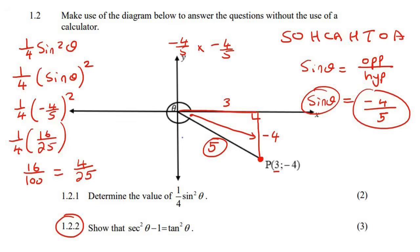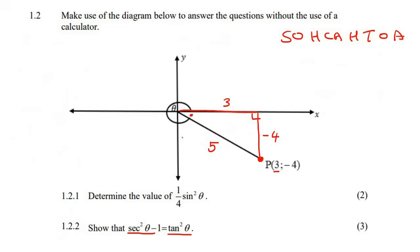This one says, show that this is equal to that. Now, we're allowed to use the diagram. So let's go work out, remember, when you see sec squared theta minus 1, you can just think of it as sec theta squared. So let's go work out that side first. Let's just say we're going to work on the left-hand side so long, so that's this side.